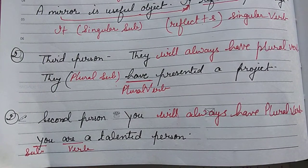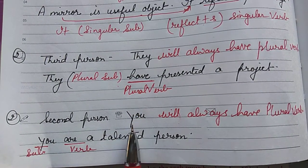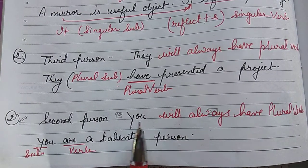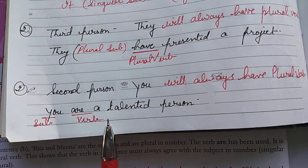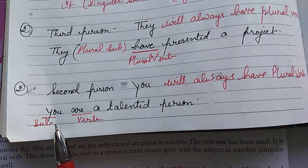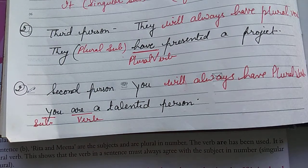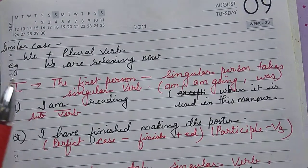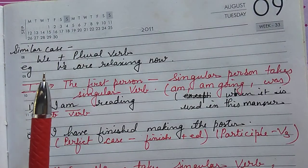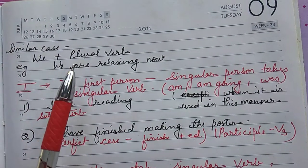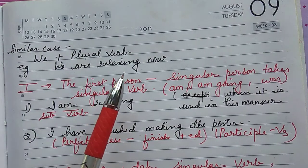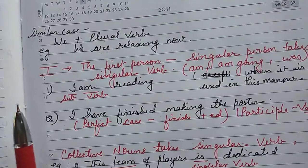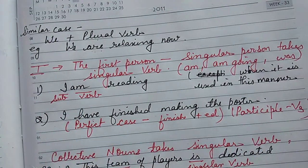When the subject is the second person 'you,' you always use a plural verb — not 'you is,' but always 'you are.' For example, 'You are a talented person.' Similarly, 'we' is a plural subject, so it takes a plural verb. For example, 'We are relaxing now' — 'are' is the plural verb.